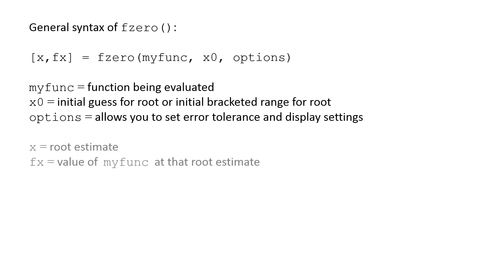The output of the fzero function is the root estimate, x, and the value of the function at that root estimate, fx.